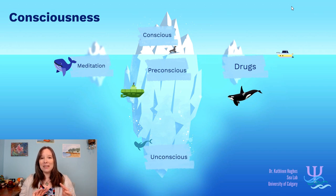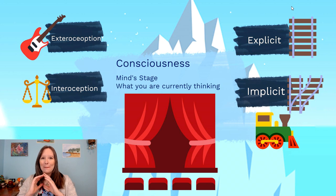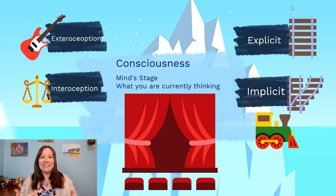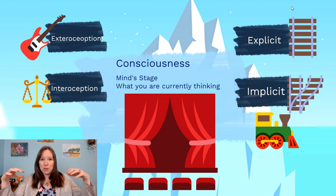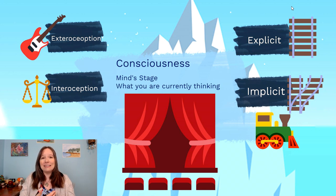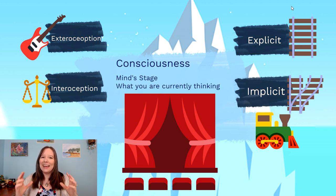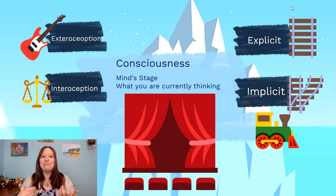The consciousness, at the peak of the iceberg, is what's on our mind stage at any given moment — like a spotlight or a stage where top dancers and musicians perform. Our stream of consciousness can only focus on one thing at a time. Even when multitasking, our mind might have two stages, but we're only shining the spotlight on one at a time. If you're listening to class and texting a friend, your consciousness goes back and forth between them — it can't be on both at once.